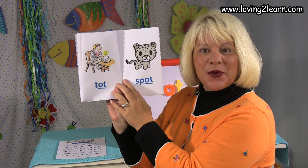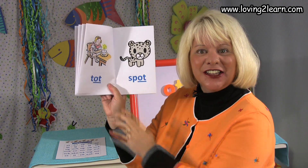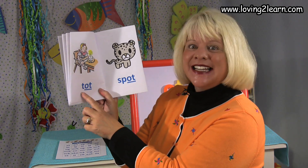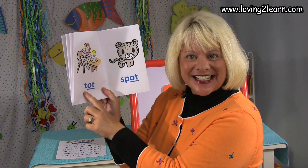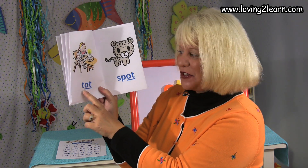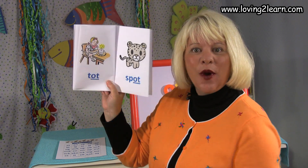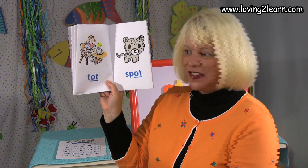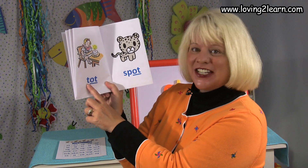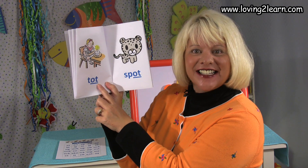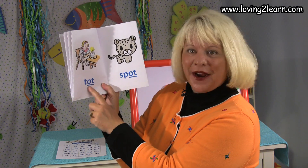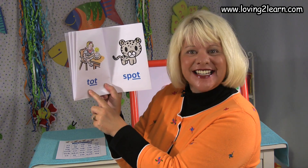Here we see a little girl who is a tot. Here's the word tot. Where do you see the Ought chunk in the word t-o-t? That's right, it's at the end.